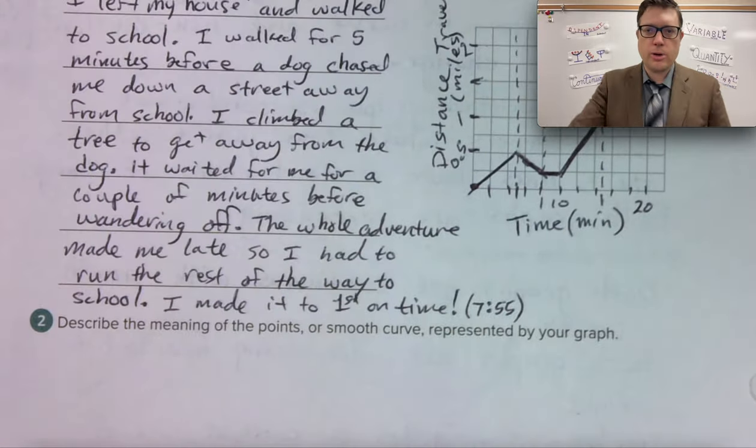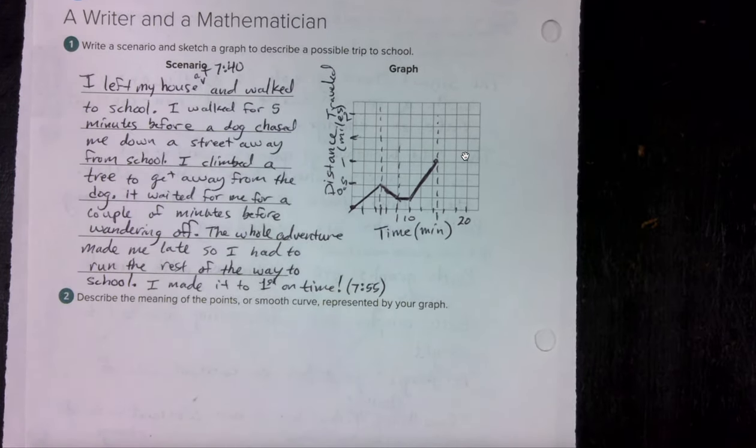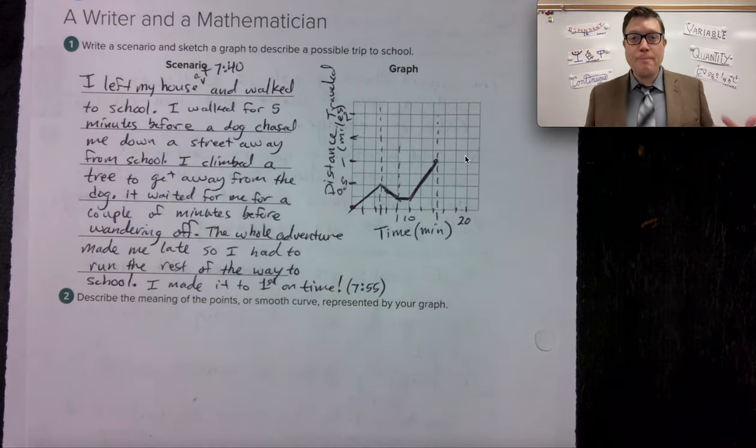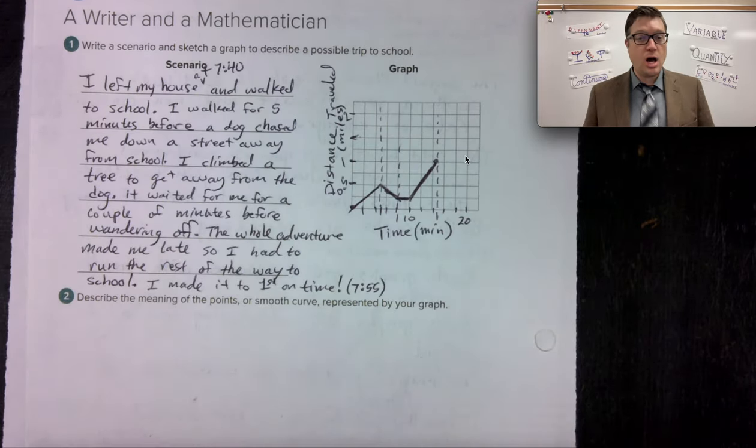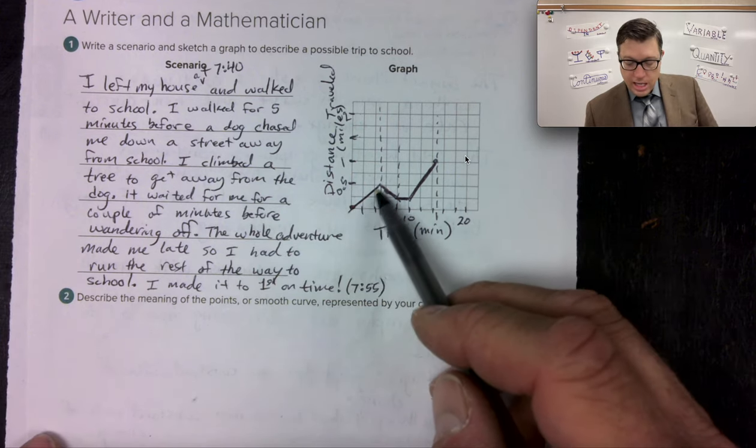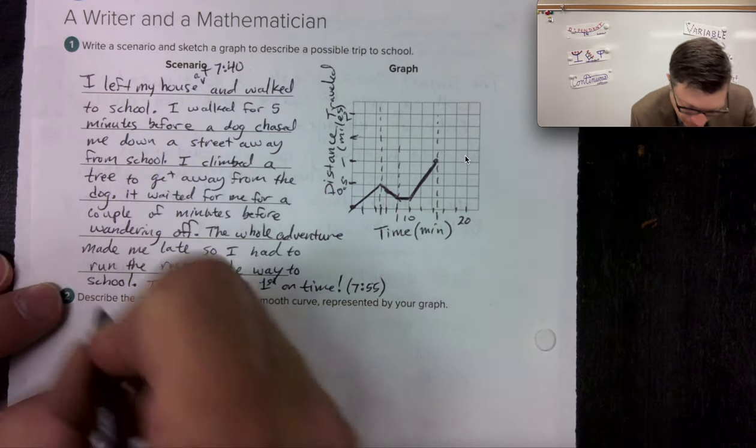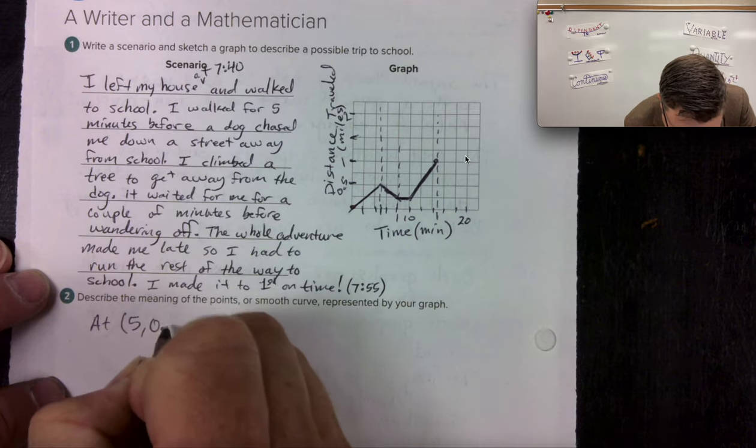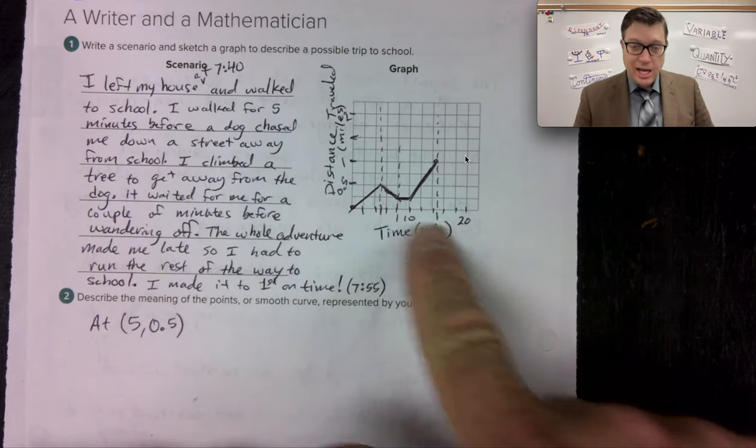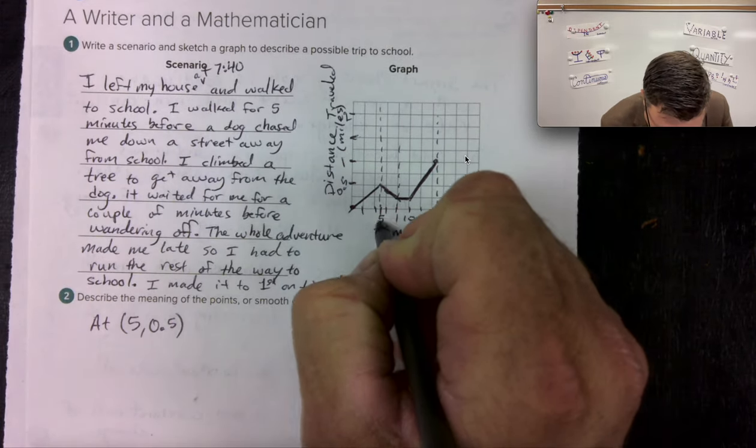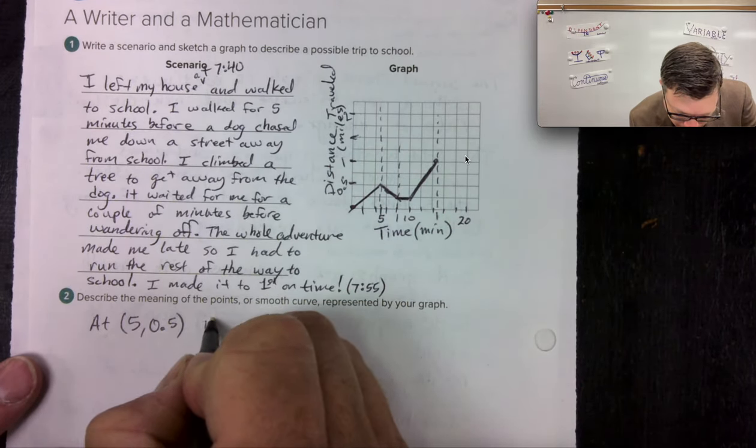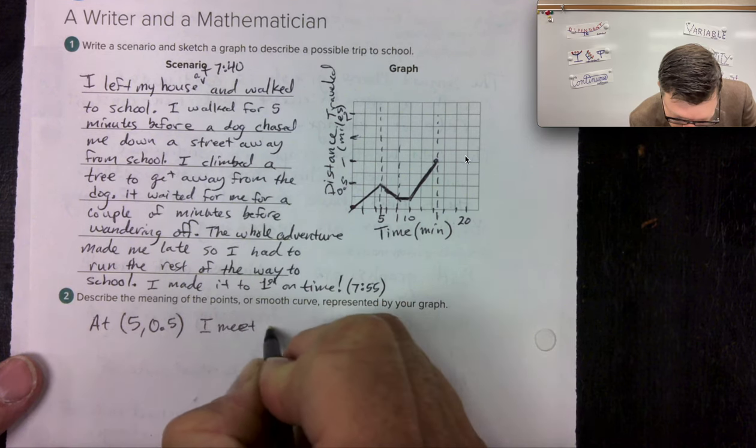Now, it's going to go to the next one. I'm moving the camera around a lot. I'm just going to zoom out. There we go. I want to zoom out because question two, describe the meaning of the points or smooth curve represented by your graph. Now in my graph, it's all made up of smooth lines, but it's not a smooth curve itself. So I have a corner right here where I change direction at, what is this? Five minutes and a half a mile. So at five comma 0.5, that's how we write coordinates. We write the x-coordinate first, which is the five. And then we write the y-coordinate second, which is 0.5. At five comma 0.5, I meet the dog.